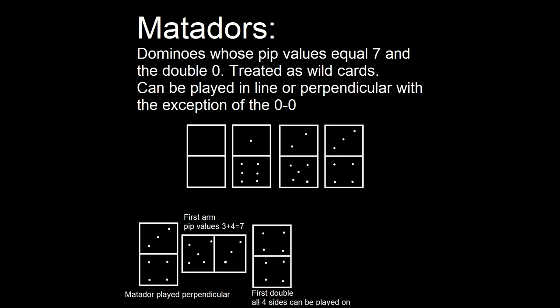And to show you an example there at the bottom, any time a domino meets with another domino, the pip values that touch must be equal to 7, unless of course you are playing a wild card. In this case, we have played a Matador, so the 4-3 can be played on the 5-3, because the pip values do not necessarily have to match.